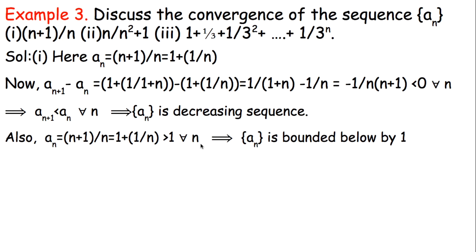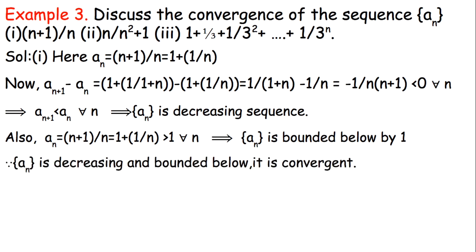Since AN is a decreasing sequence, we check whether it is bounded below. Since N+1 is always greater than N for any natural number, AN = (N+1)/N is always greater than 1. So it is bounded below by 1. Since it is decreasing and bounded below, it cannot decrease past that lower bound, so it must be convergent.